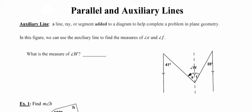In this video, we are going to extend our knowledge of parallel lines to include something called an auxiliary line. An auxiliary line is any line, ray, or segment added to a diagram in order to help complete a problem in geometry. My first piece of advice regarding auxiliary lines would be to add one only if you need to, because adding one to a diagram is going to complicate it.